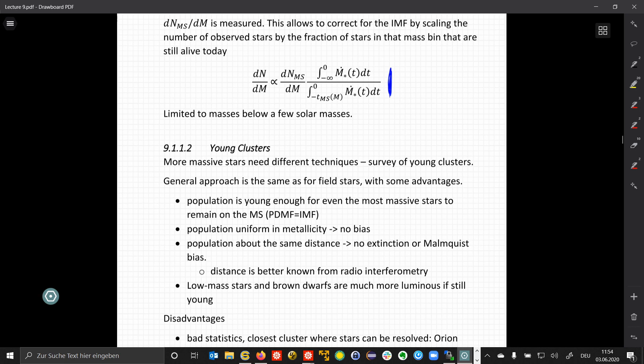And this allows, because of the young age, to also sample more massive stars. Here the approach is the same as for field stars, and we have a couple of advantages. Due to their young age, the population also still hosts the most massive stars, so they are still on the main sequence, which means that the present-day mass function is basically still equal to the initial mass function. The population is uniform in metallicity, so we have no metallicity bias to correct for. The young cluster is so small and so confined that all the stars in this cluster have about the same distance, so we do not have to correct for a Malmquist bias or for different extinction. And there are additional complementary methods to measure the distance to the cluster, so we have independent means to accurately determine the distance.